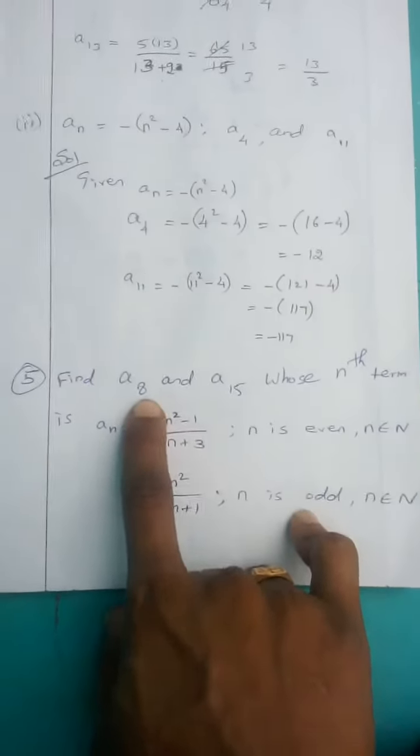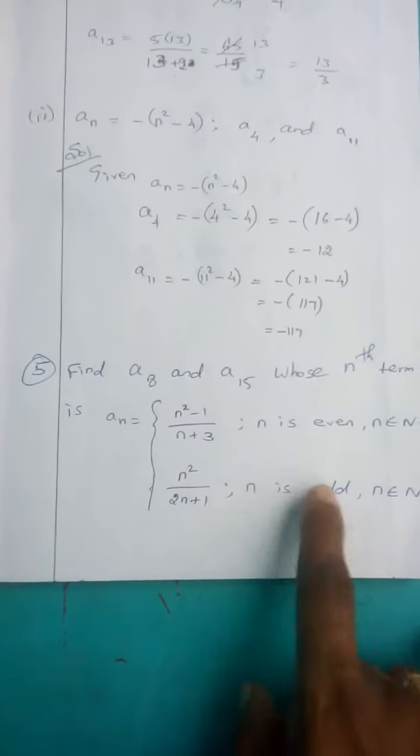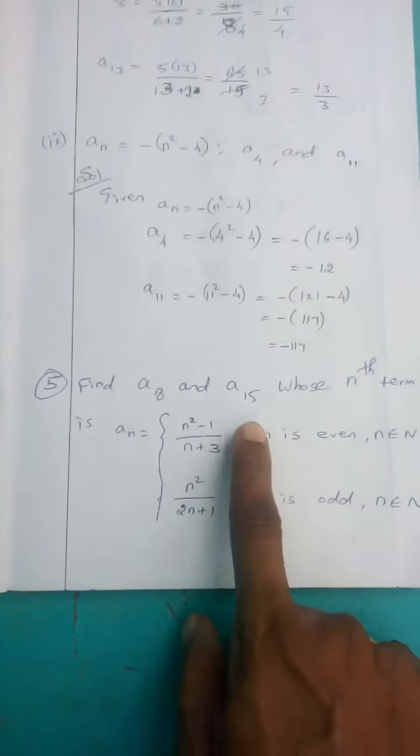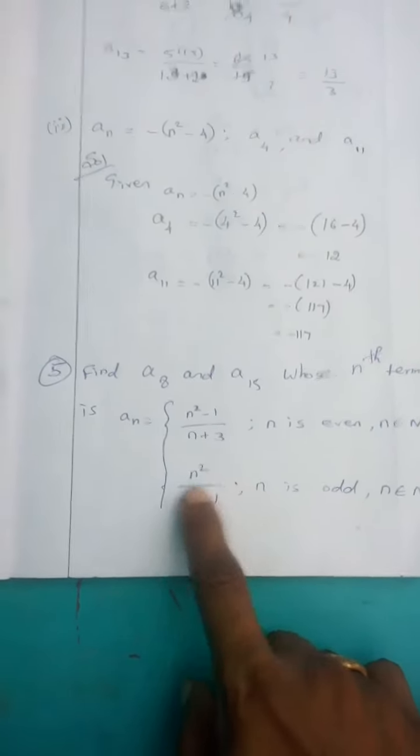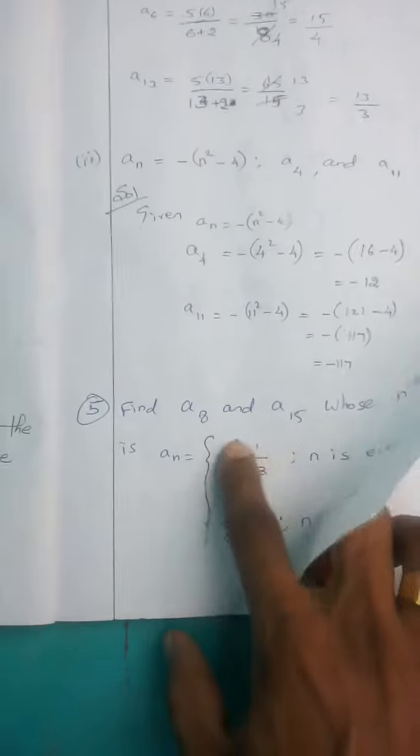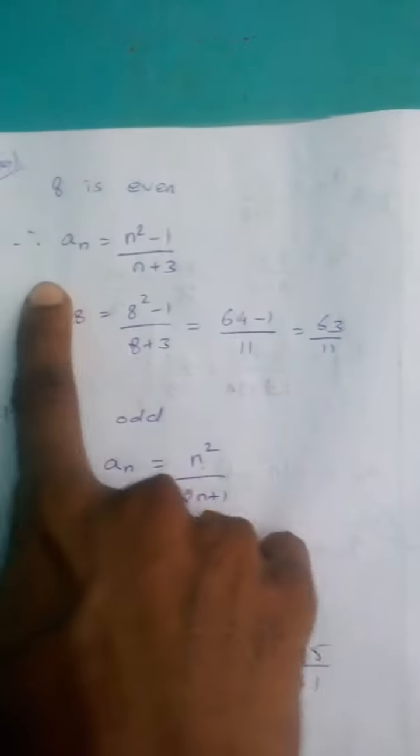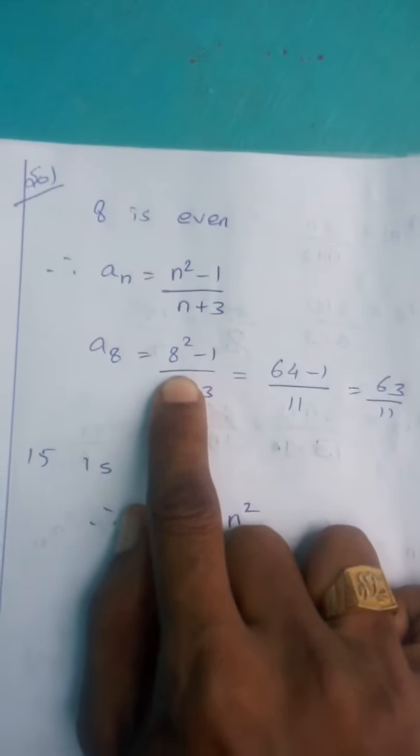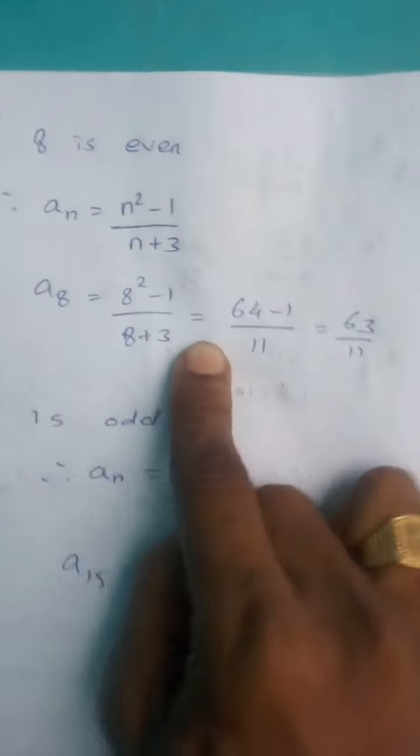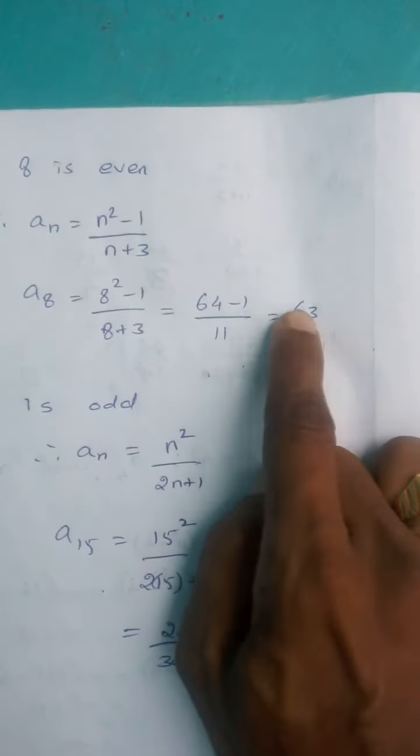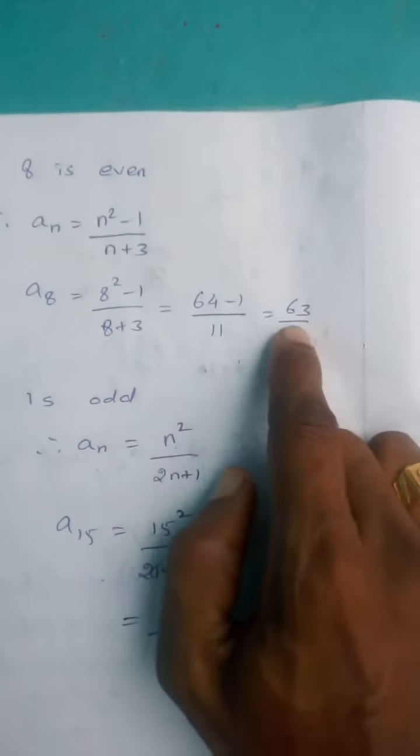So A8, since 8 is even, we use AN equals n squared minus 1 divided by n plus 3. A8 equals 8 squared minus 1 divided by 8 plus 3, which is 64 minus 1 divided by 11, giving us 63 divided by 11.